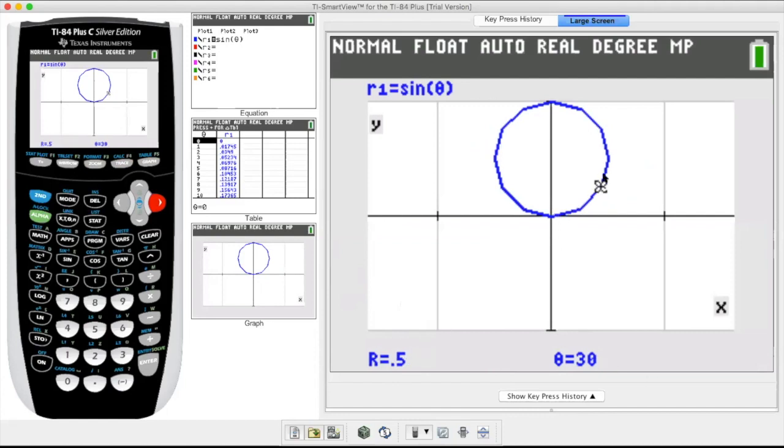So that is, if you were to draw a straight line from the origin to the blinker, that would be a length of a half.